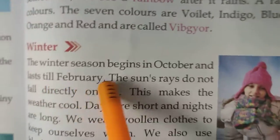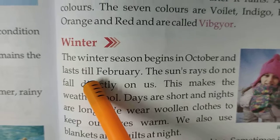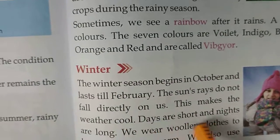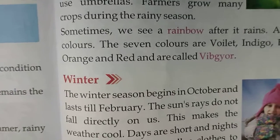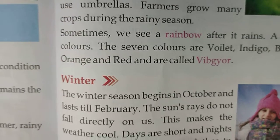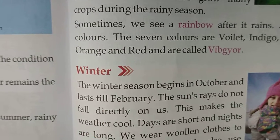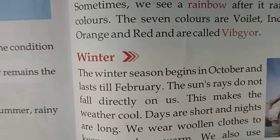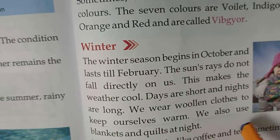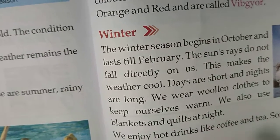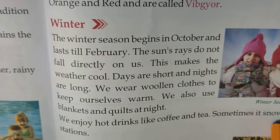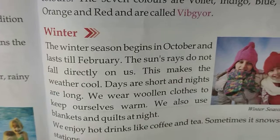Winter: The winter season begins in October and lasts till February. The sun's rays do not fall directly on us, which makes the weather cool. Days are short and nights are long — the opposite of summer. We wear woolen clothes to keep ourselves warm. We also use blankets and quilts at night. We enjoy hot drinks like coffee and tea. Sometimes it snows on the hill stations.